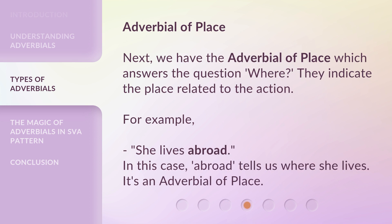Adverbial of place. Next, we have the adverbial of place, which answers the question where — they indicate the place related to the action. For example, she lives abroad. In this case, abroad tells us where she lives. It's an adverbial of place.